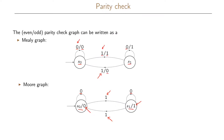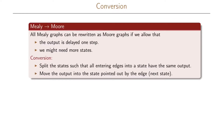More generally, in the Mealy graph every time we enter state S0 we output a 0, and every time we enter state S1 we output a 1. So the two graphs output exactly the same sequence, but the Moore graph is one time unit delayed behind the Mealy graph. Using this observation we can see that it is possible to convert from a Mealy graph to a Moore graph, accepting that the output is delayed one step and that we might need more states in the Moore representation.